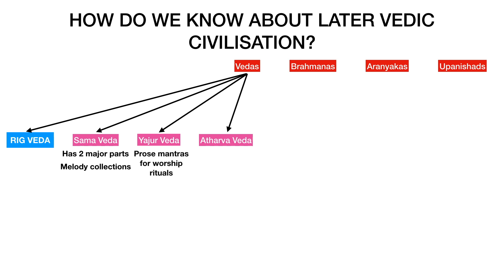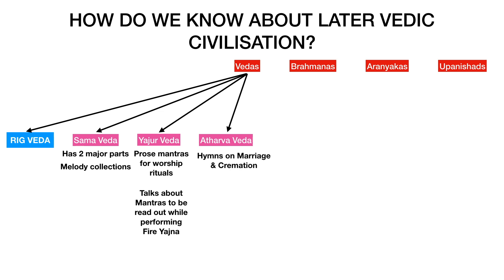Coming to Yajurveda, it is a compilation of ritual offering formulas set by priests while an individual performed ritual actions such as those before the Yajna fire. It consists of prose mantras. The Yajurveda has been the primary source of information about sacrifices during Vedic times and associated rituals. The Atharva Veda was not considered a Veda in the Vedic era and was accepted as a Veda in the late 1st millennium BCE. Compiled last among all Vedas, it is sometimes called the Veda of Magical Formulas and includes hymns dealing with marriage and cremation.